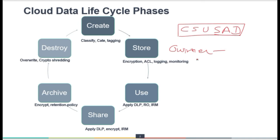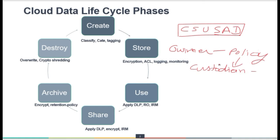The data owner will always write and define the policies — how its data should be protected. The custodian is always responsible to follow and implement those policies properly so there are no lapses in data protection. The data owner defines policies in line with their organization, contracts, and obligations to their end customers, while the custodian implements and applies those policies on that particular information.